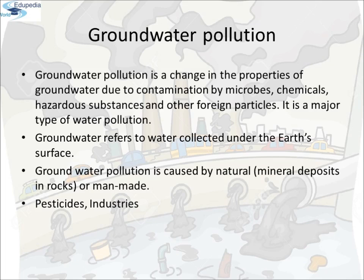Groundwater Pollution: A considerable amount of the Earth's water is found in soil or under rock structures called aquifers. People use aquifers to obtain drinking water and build wells to access it. In case this water becomes polluted, it is called groundwater pollution. Ground water refers to water collected under the Earth's surface. Groundwater pollution is a change in the properties of ground water due to contamination by microbes, chemicals, hazardous substances and other foreign particles.